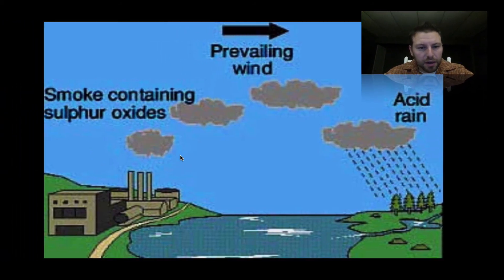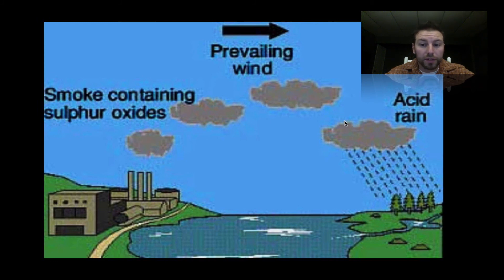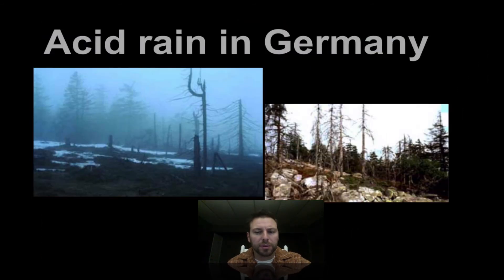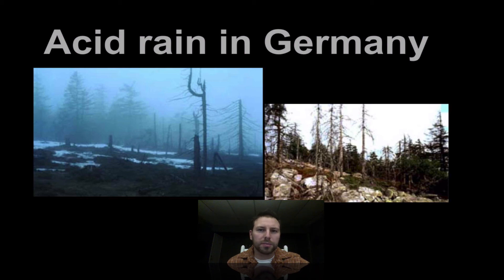Those prevailing winds bring it over to another area. In Germany, for example, we see forests that have been completely annihilated due to acid rain. It happens all over the place — it changes the soil conditions, which ultimately makes it worse for certain species of trees to grow.